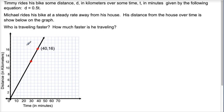Timmy rides his bike some distance d, in kilometers, over some time t in minutes, given by the following equation d equals 0.5t, or half t. Michael rides his bike at a steady rate away from his house. His distance from the house over time is shown below on the graph. Who is traveling faster? How much faster is he traveling?